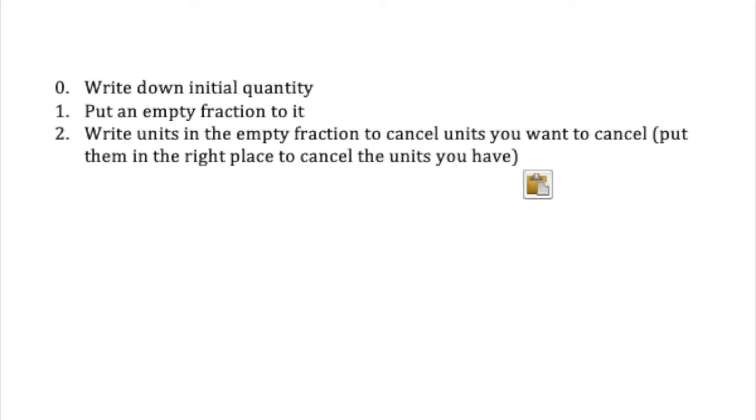So what are the steps to doing this process? Step zero, you write down the starting quantities. Step one, you put an empty fraction next to it. Step two, you want to write in the units that you want to cancel. Remember, units on top cancel with units on bottom and units on bottom cancel with units on top.